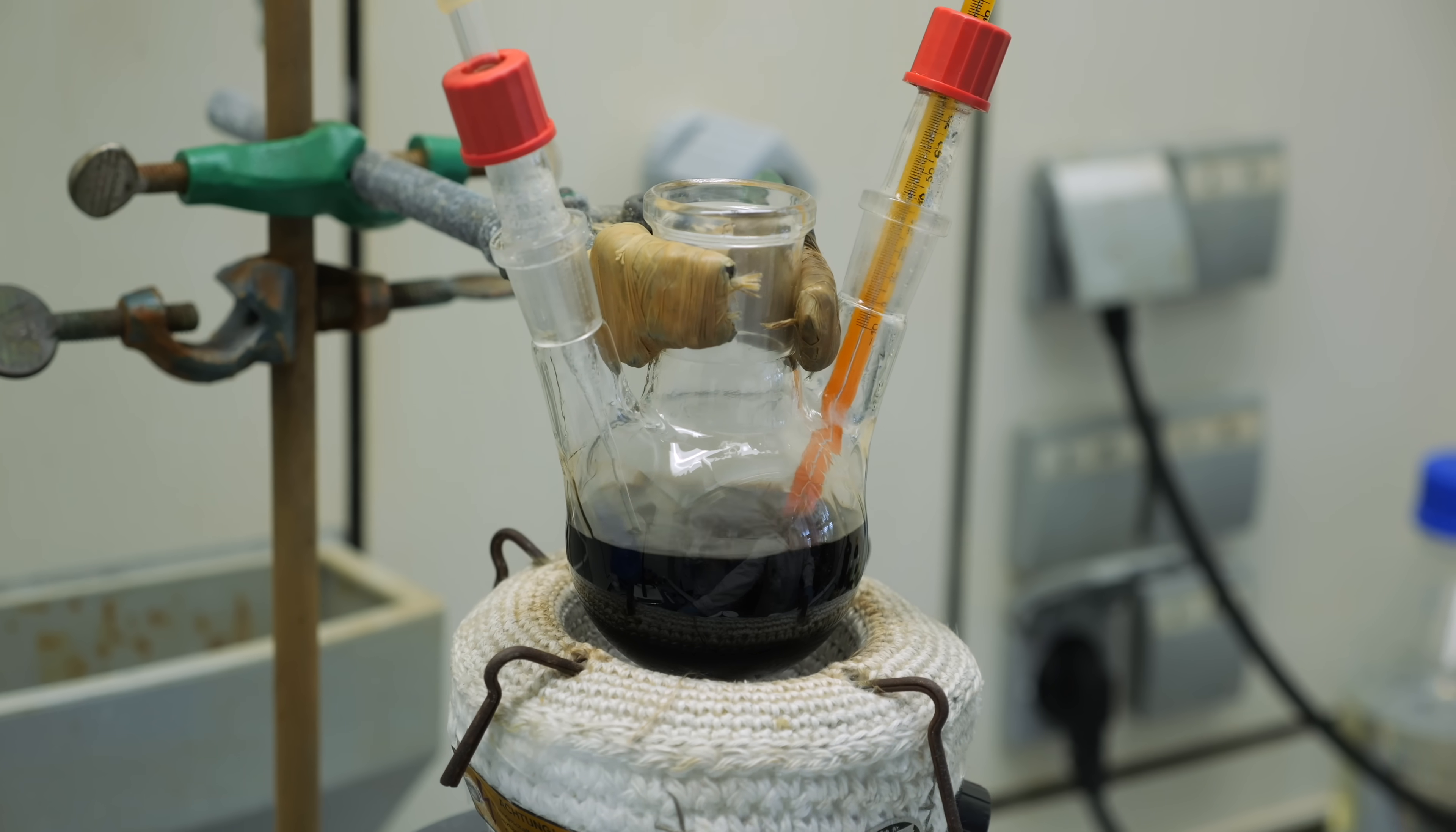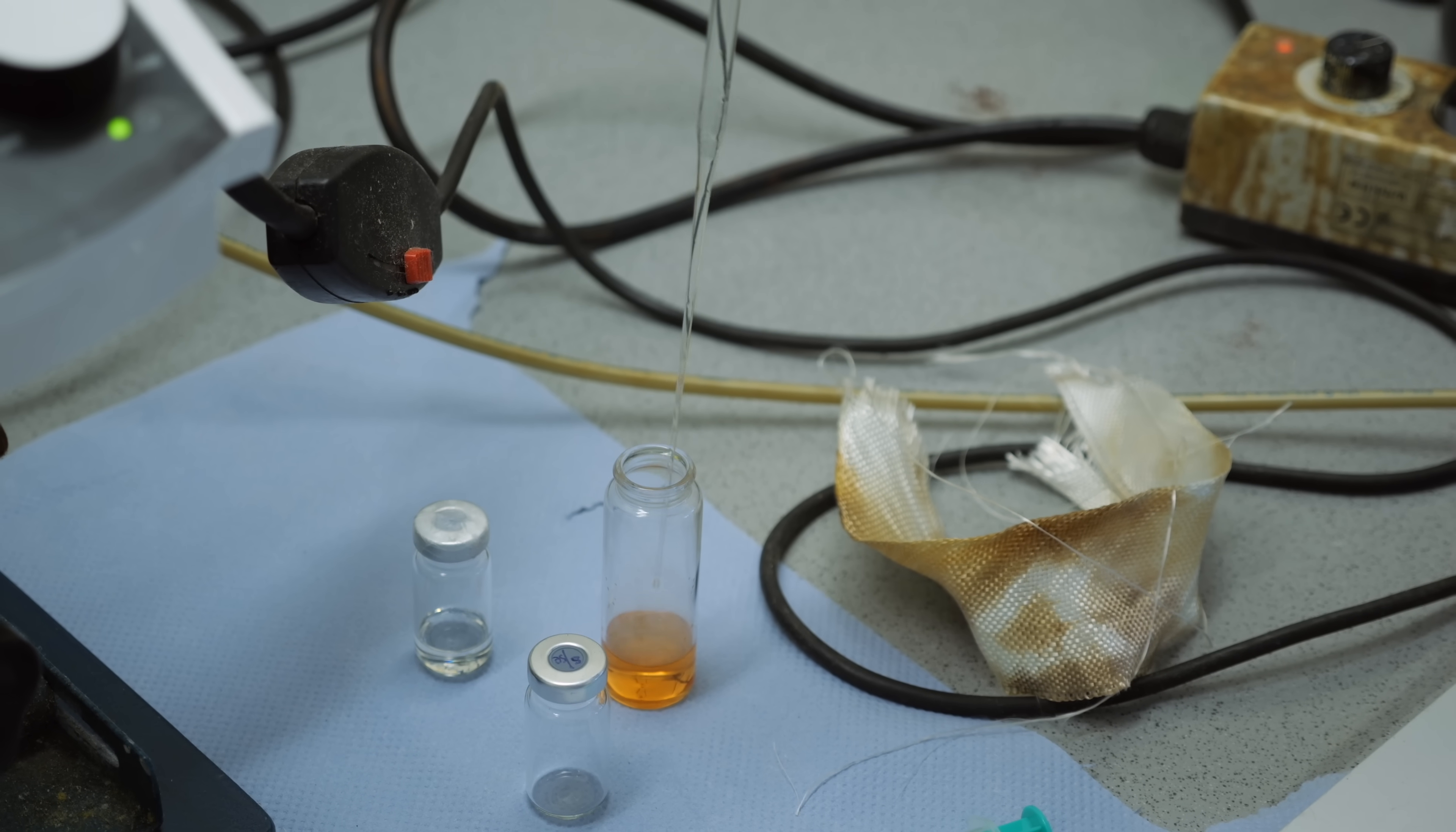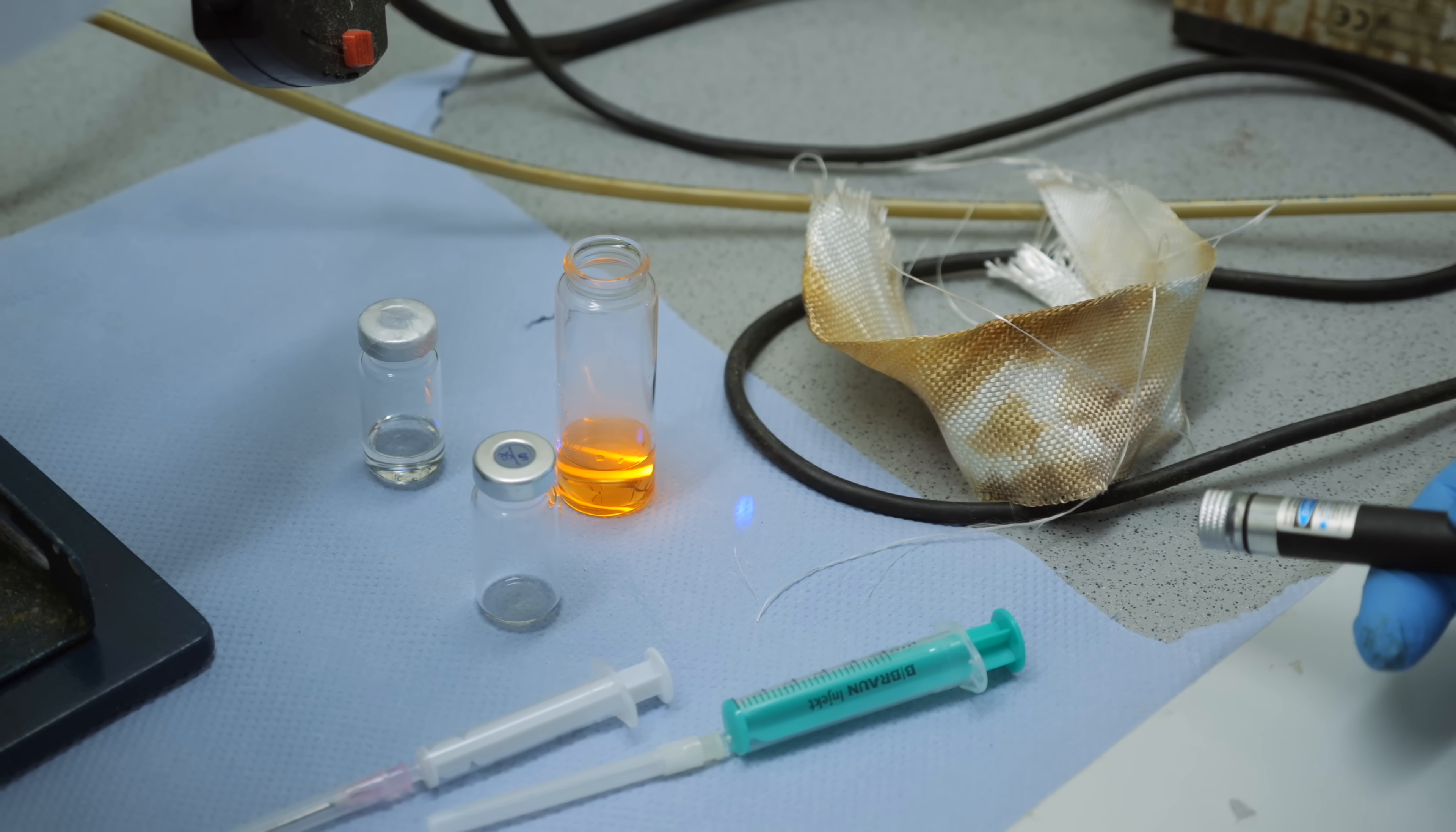Technically speaking, at this stage we already had our quantum dots, or at least the thing that we call the cores of our quantum dots. The concentration of them was so high that the liquid actually appeared almost black, but once we took a small sample of it and diluted it, the final color already became very clearly visible.